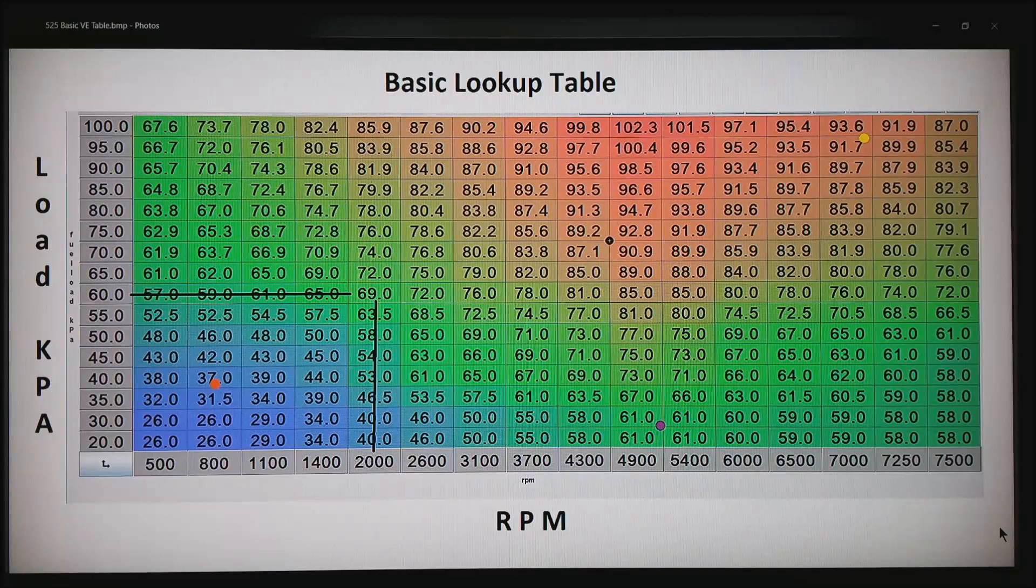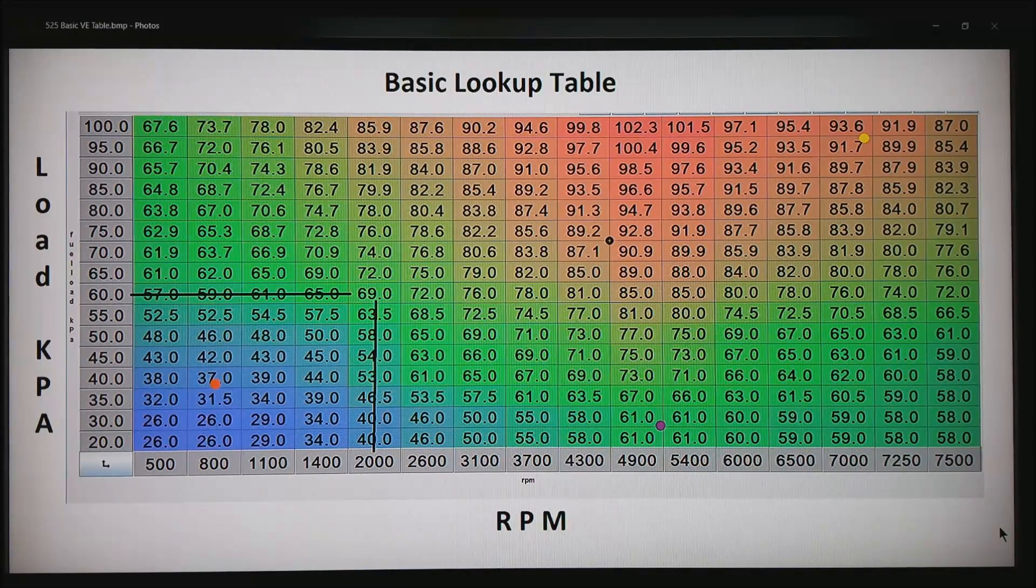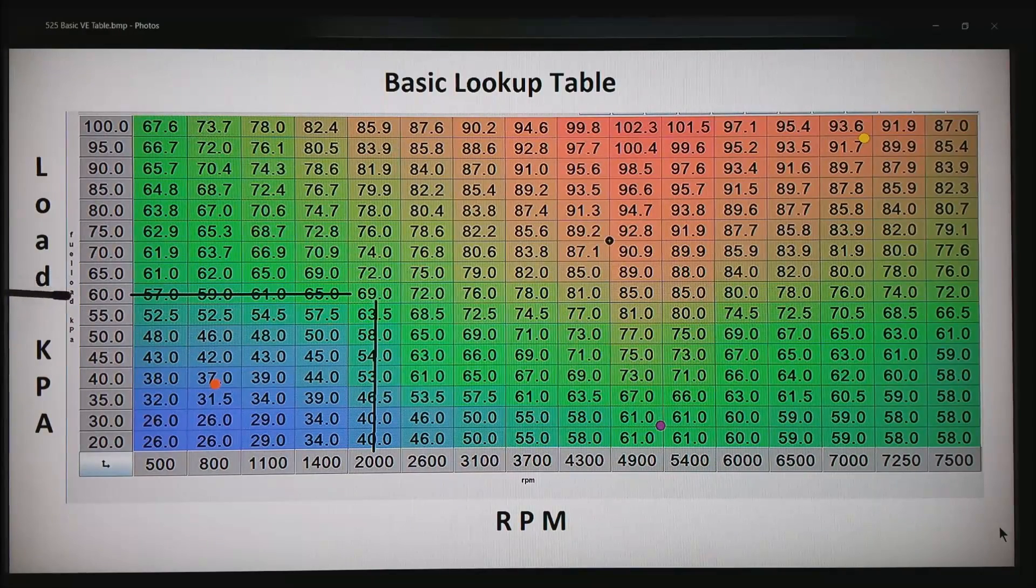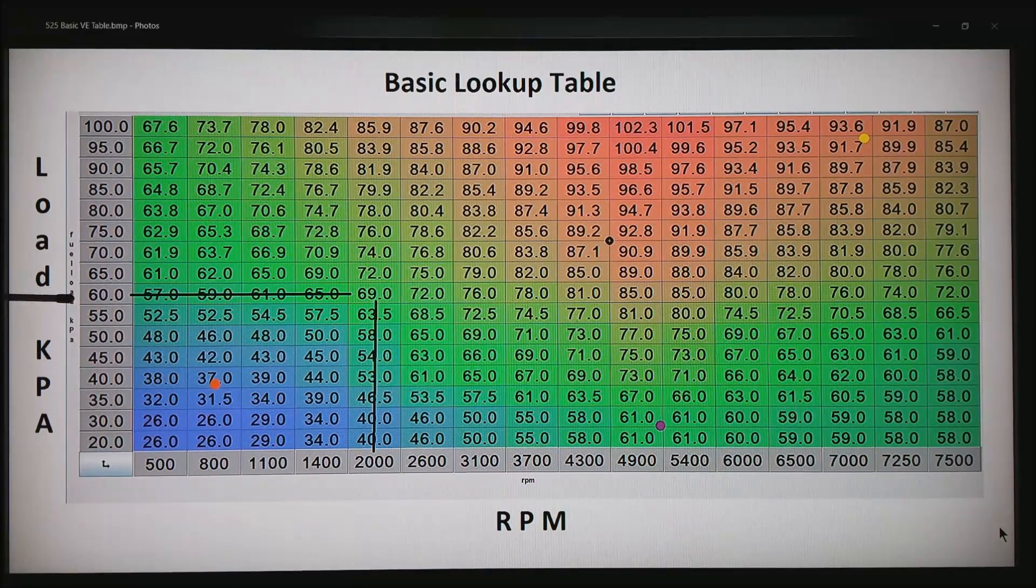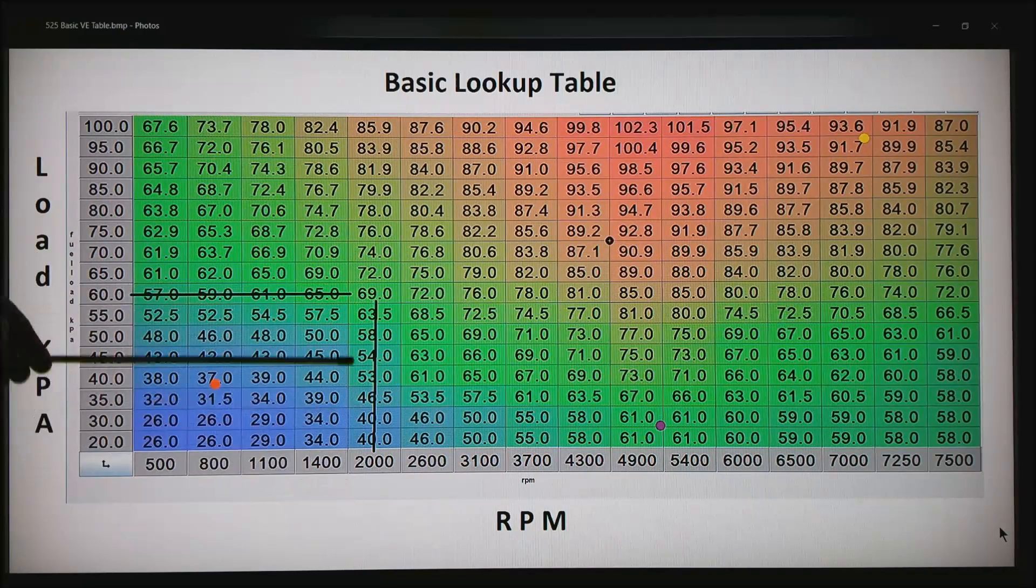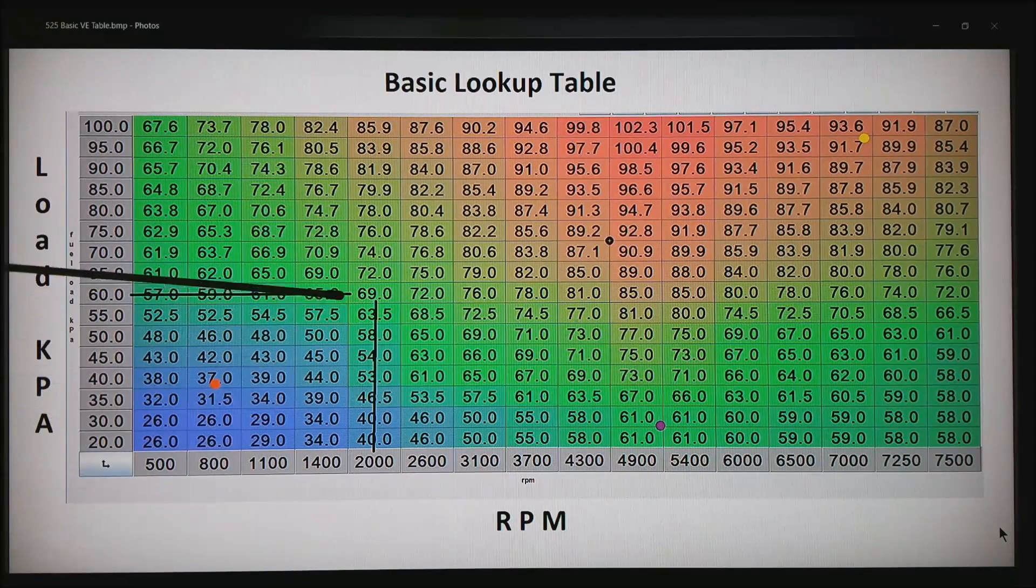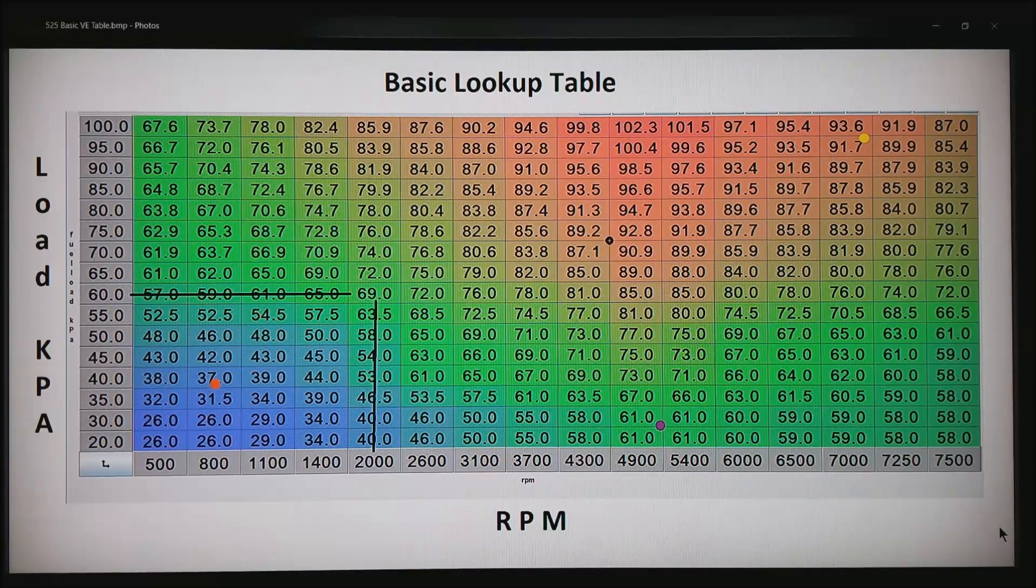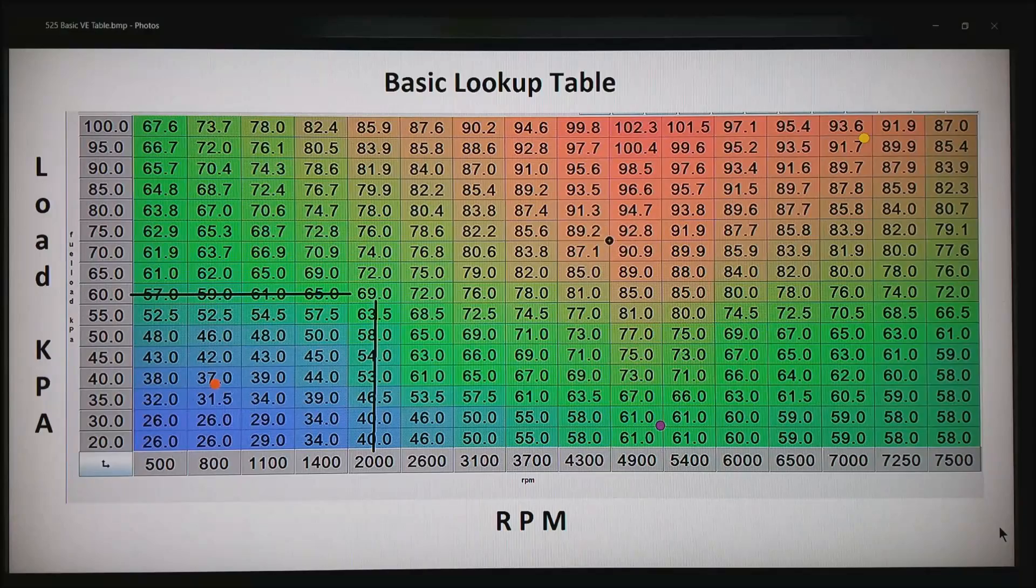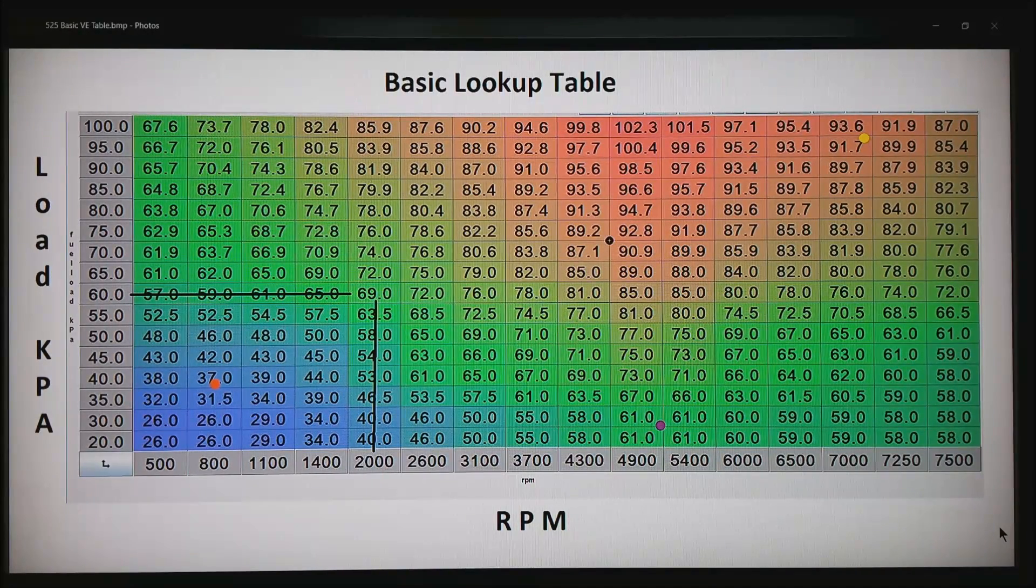We use these anytime we can't easily create a formula to model something. So in this case we'd have 60 kPa and 2000 rpm, go vertical on the 2000 column, horizontally on the 60 column, and what we get is 69. This is a number that we probably started with a default number from a default tune but then tuned in on a dyno.